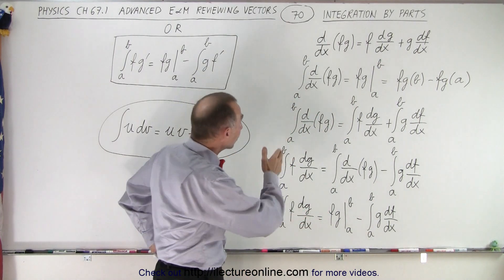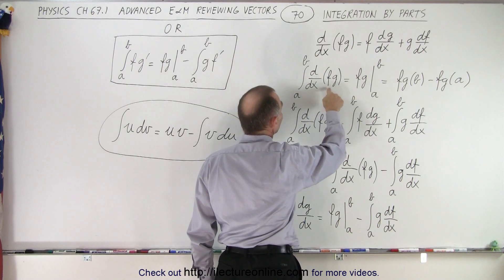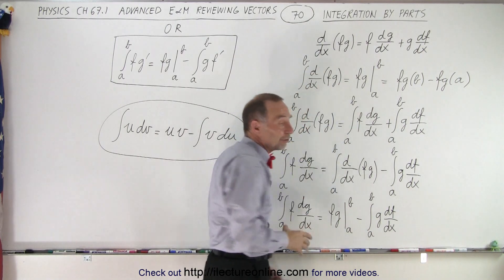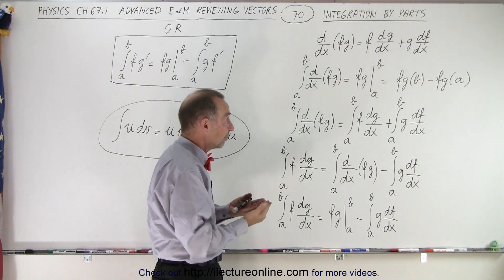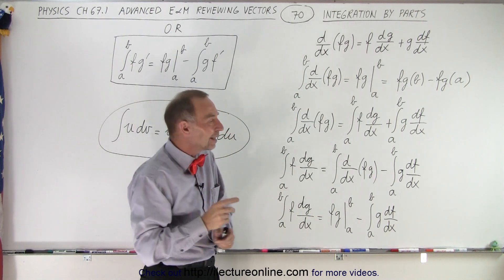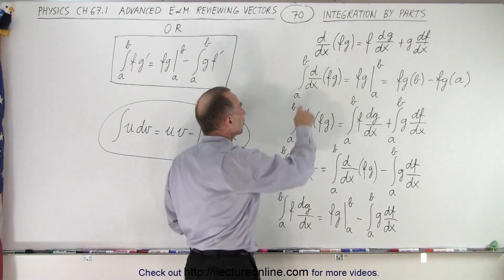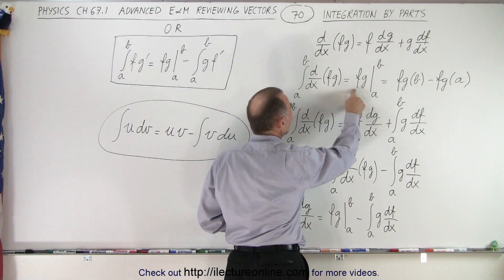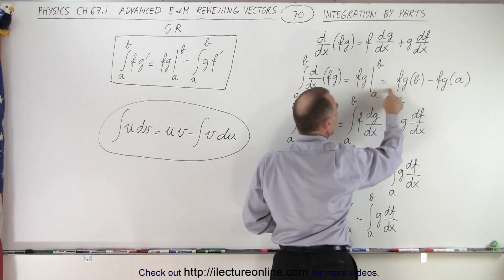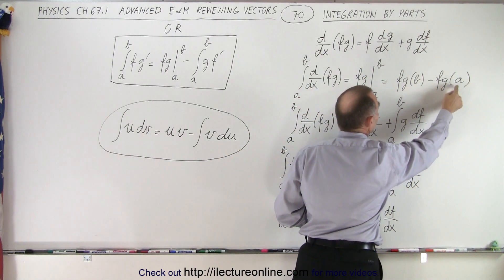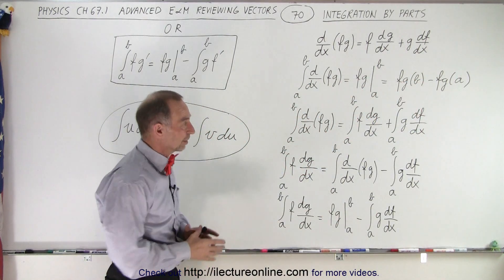Then, if we take the integral of the left side — the integral from a to b of d/dx of f times g — you can think of this as a single function, because the product of two functions becomes a single function. This looks a lot like the fundamental theorem of calculus: the integral of the derivative of a function equals the function evaluated at its endpoints — that is, the function evaluated at b minus the function evaluated at a. This is known as the fundamental theorem of calculus.